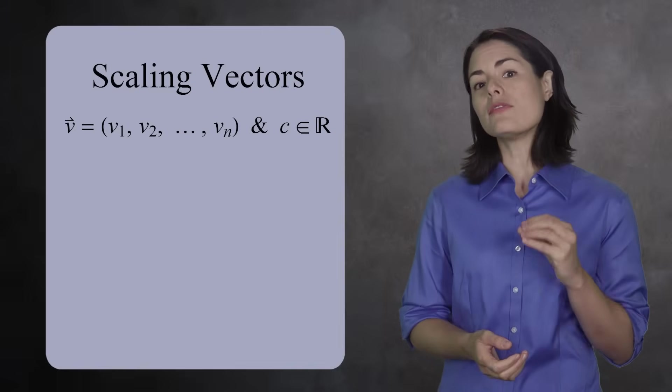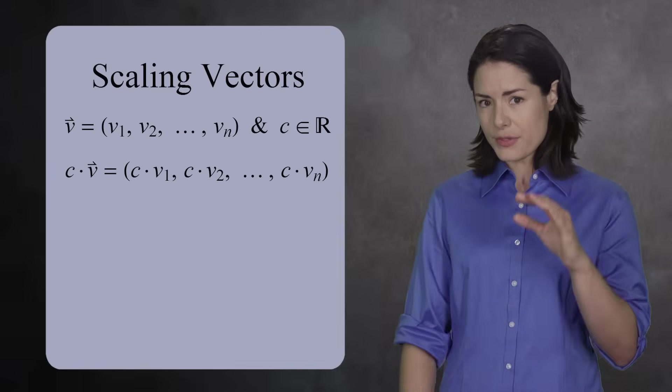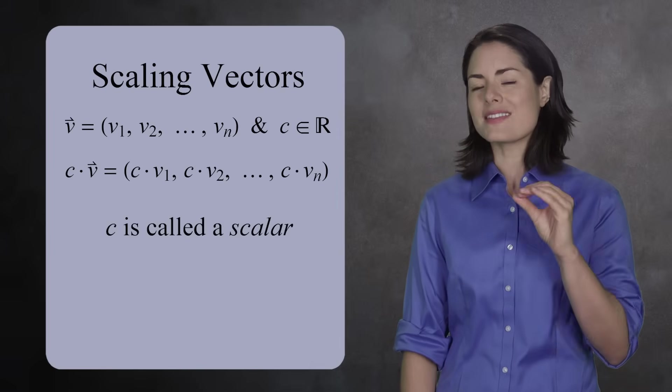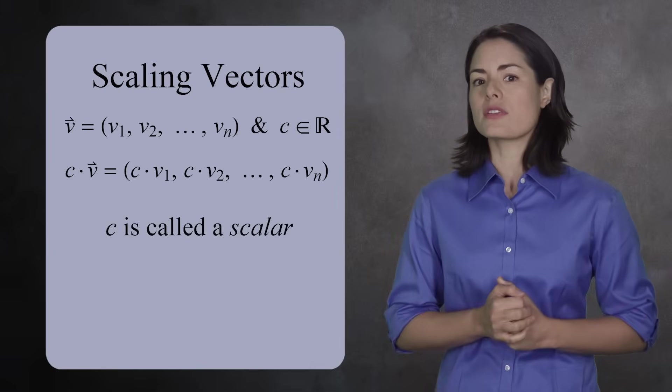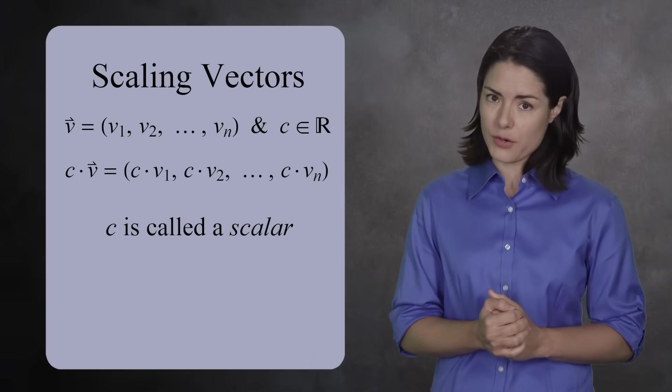But vector spaces are more than commutative groups. You can scale vectors by multiplying each coordinate by a real number. Remember, when you do this, the number is called a scalar. These scalars give vector spaces additional structure and features beyond ordinary groups.